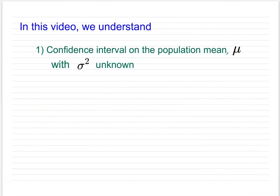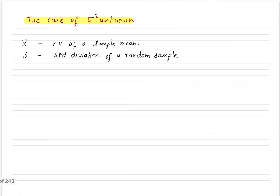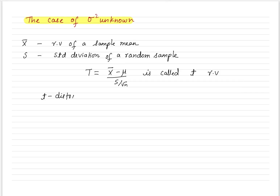In this video, we understand the confidence interval on the population mean when variance is unknown. Let x-bar be the random variable of the sample mean and s be the standard deviation of the random sample. Then the random variable t = (x-bar minus mu) divided by (s upon root n) is called the t random variable, and it assumes a t distribution with n minus 1 degrees of freedom, where n is the size of the random sample.